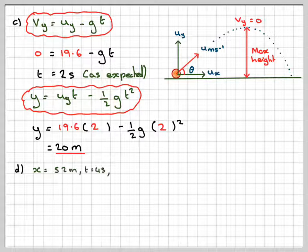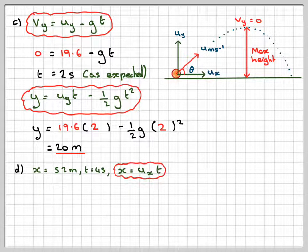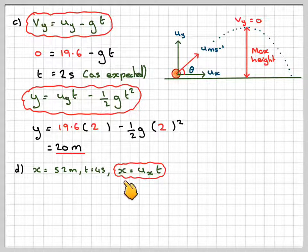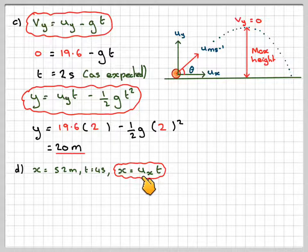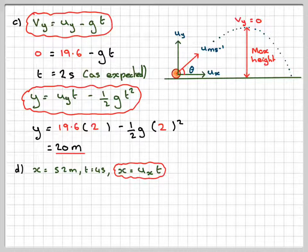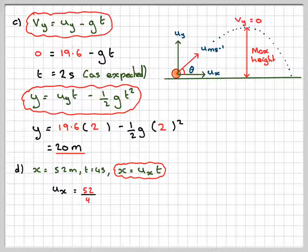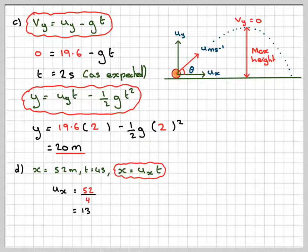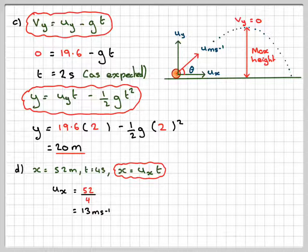D. We've got x is 52 metres. So this distance is 52. t is four for that. And we know that x is the horizontal component of the velocity, initial velocity times t. So ux will be 52 divided by four, which gives me 13.